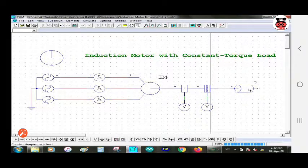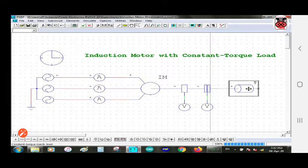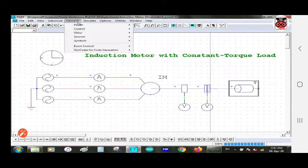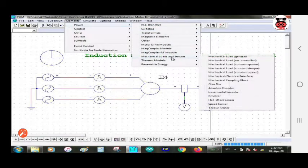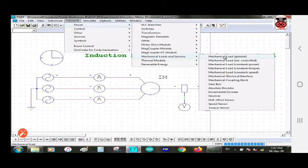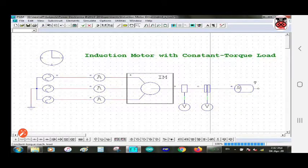And the last, constant torque mechanical load. You can take this load from element, power, mechanical load and sensor, and the mechanical load as constant torque. This is fourth one, mechanical load of constant torque. You can take this element from here.